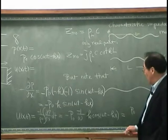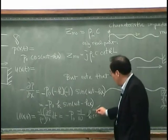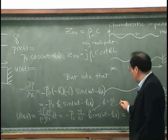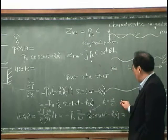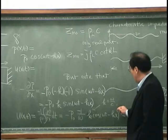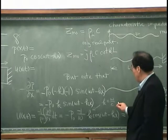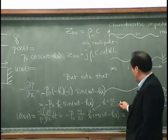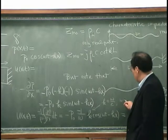And P0, and it notes that K is equal to omega over C, and omega is equal Kc.